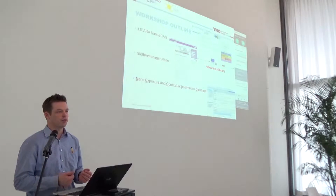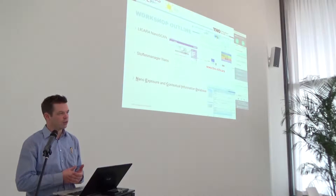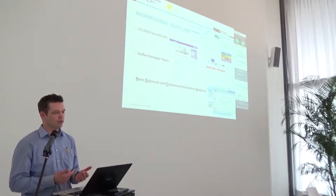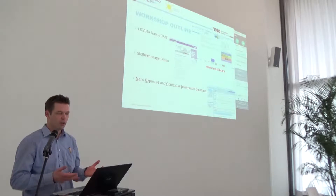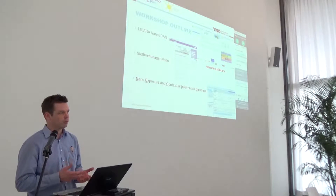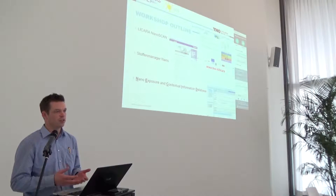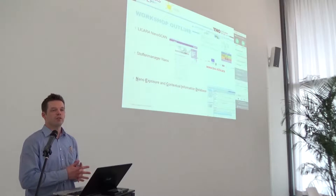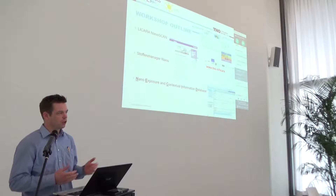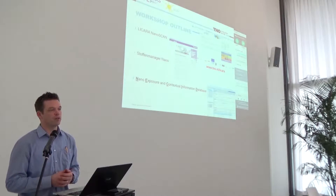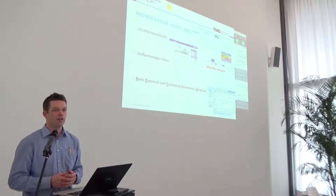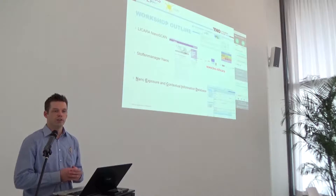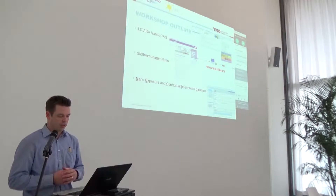The NESSIT database contains information on the location where you measure, on the workplace, on the workers that are present, on the use of risk management measures, on the quantity that's used, and on the type of activity that's performed. It's a huge amount of data that you need to provide to enter entries in the database.